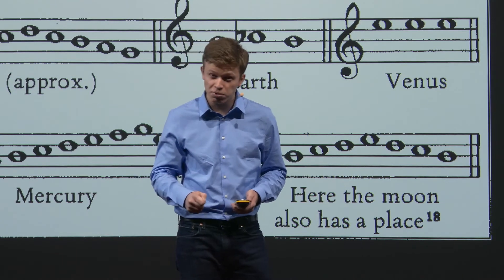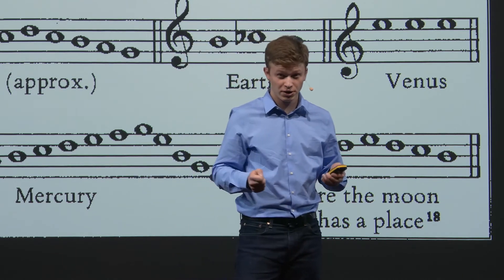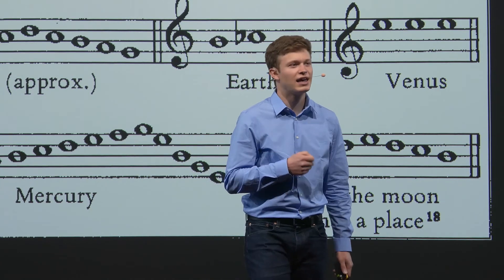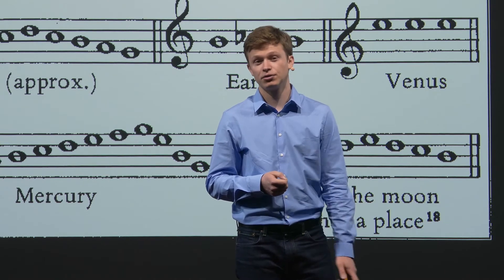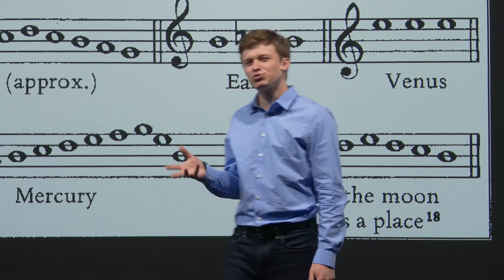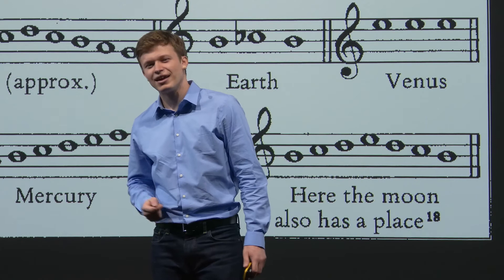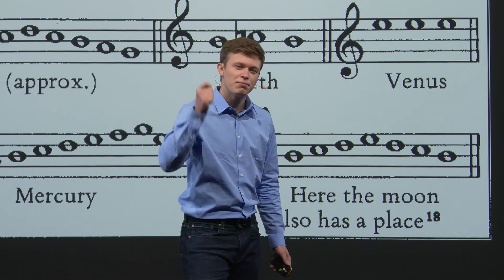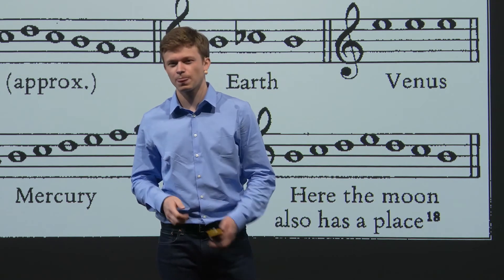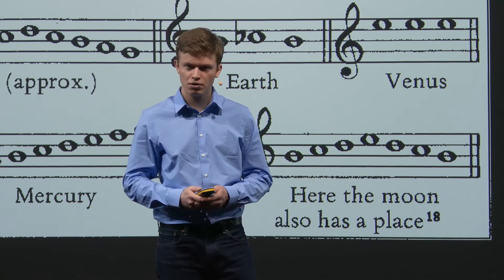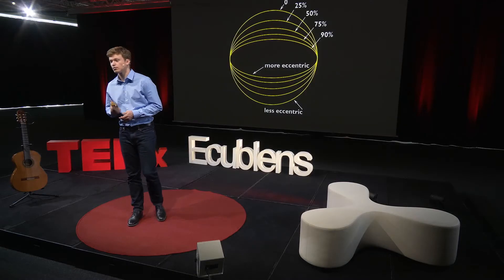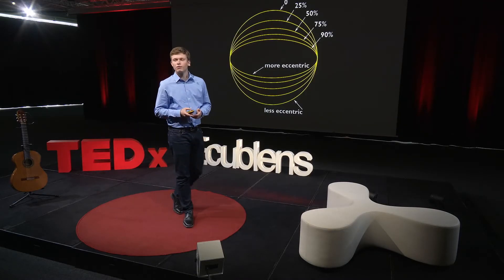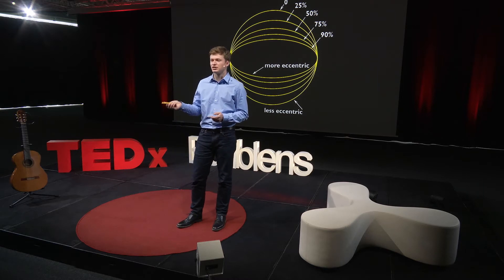Kepler gave the slower planets, like Jupiter, a lower note, and he gave the faster planets, like Mercury, a higher note. But to create an actual scale, Kepler needed not only one, but a full range of notes. In order to do that, Kepler used eccentricity. Eccentricity refers to how elliptical an orbit is, as opposed to circular.